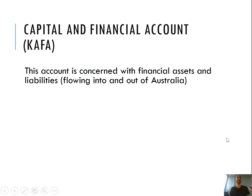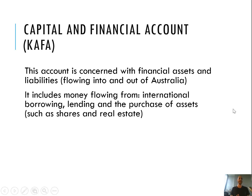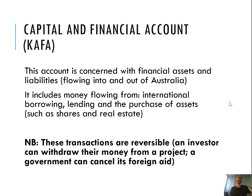What are we talking about with the CAFA? We're talking about the account that's concerned with financial assets and liabilities flowing into and out of Australia. In particular, we are looking at money flowing from international borrowing, lending, and the purchase of assets such as shares and real estate. These transactions are reversible — an investor can take their money back, unlike the current account where transactions are non-reversible.